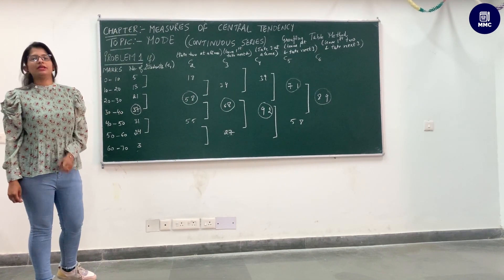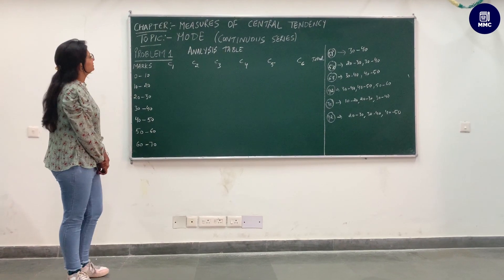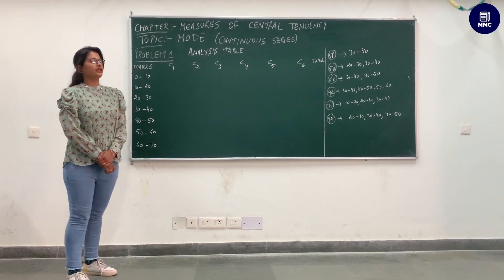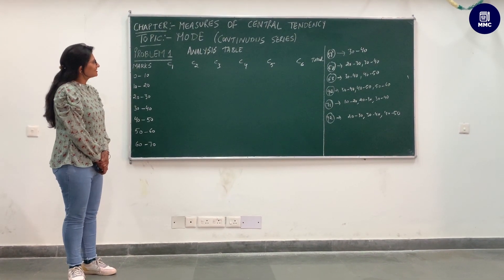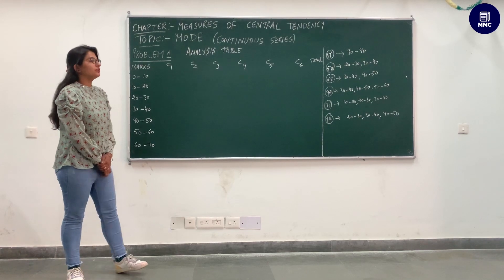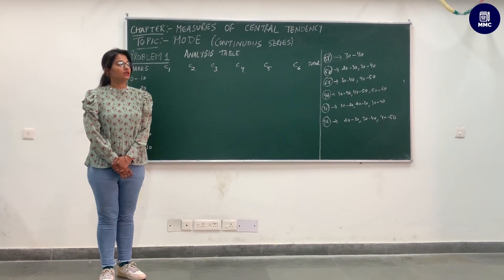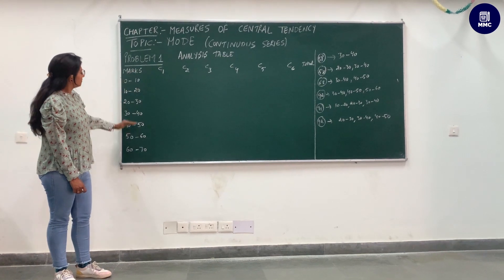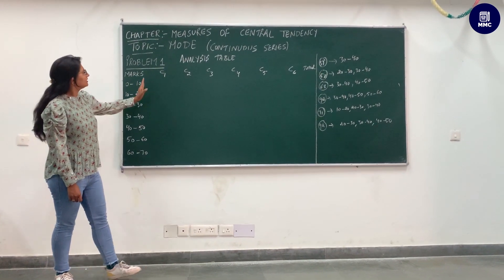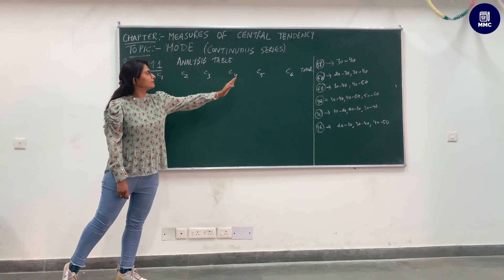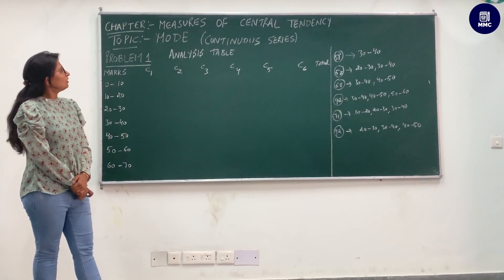Now we will learn how to make the analysis table. For the analysis table we draw marks on one side and C1, C2, C3, C4, C5, C6 on the other side.